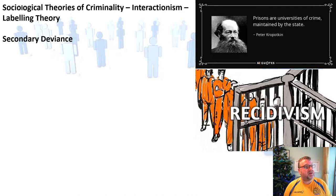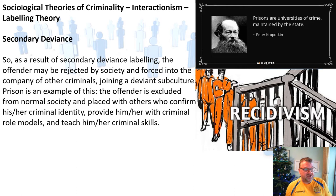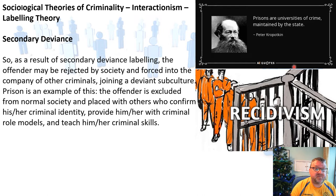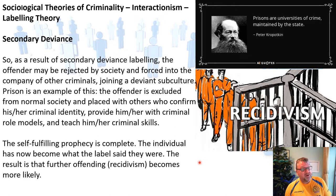As a result of secondary deviance labelling, the offender can be rejected by society and forced into the company of other criminals, joining a deviant subculture. A classic example is prison — the offender is taken out of normal society and placed with others who confirm their criminal identity, provide criminal role models, and teach criminal skills. As Peter Kropotkin said, 'prisons are universities of crime maintained by the state.' The self-fulfilling prophecy is complete, and further offending — recidivism — becomes more likely.